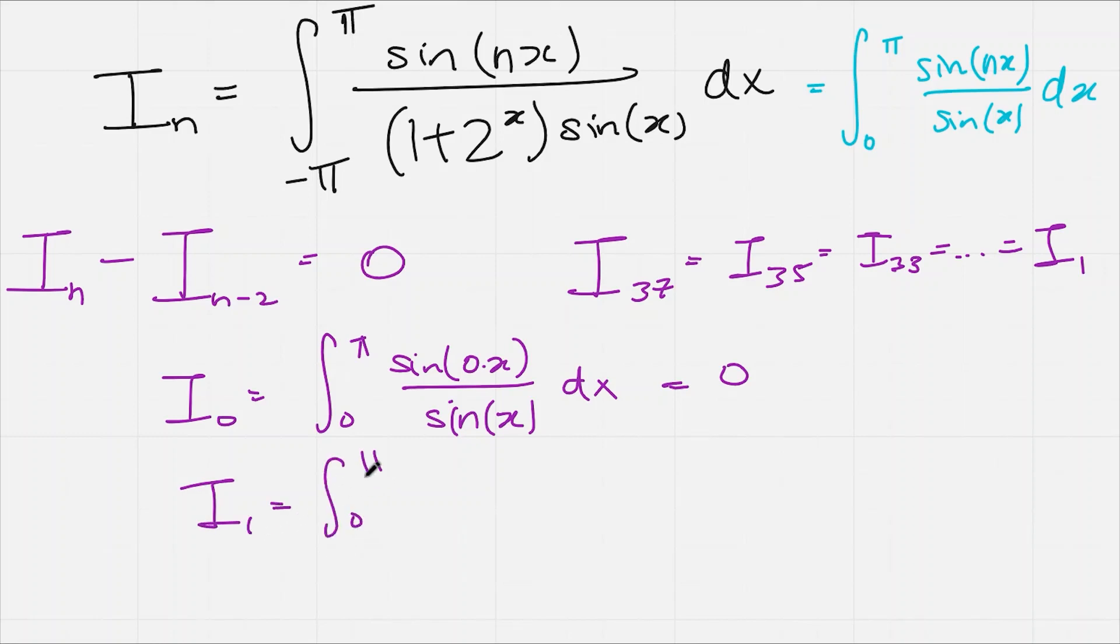How about i1? What is this? This is the integral from 0 to pi of sine of nx divided by sine of x. And that's quite nice. That cancels out. So we're just going to get pi. So i of 0 is 0. i of 1 is pi. Therefore, i of n is equal to 0 or pi. 0 if n is even. And pi if n is odd.